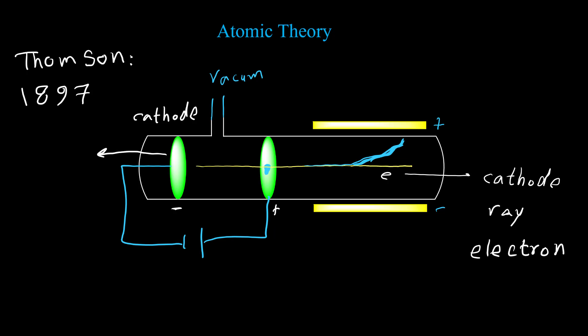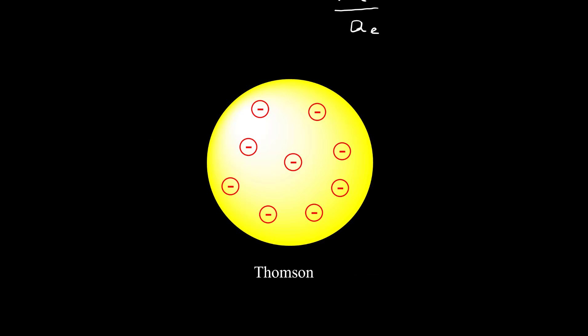Because by changing the material for the negative and positive electrode the cathode ray doesn't change, it means all compounds and all atoms should have electrons, and electrons have negative charge. So we should also have positive charge in the atom, otherwise the atom won't be neutral. Thomson was also able to calculate the ratio of the mass of electrons over the charge of electrons, but he wasn't able to calculate each of them separately — he just found the ratio. Based on the results he proposed another atomic theory. This is the structure for the Thomson atomic model: electrons are distributed inside a sphere that has positive charge.